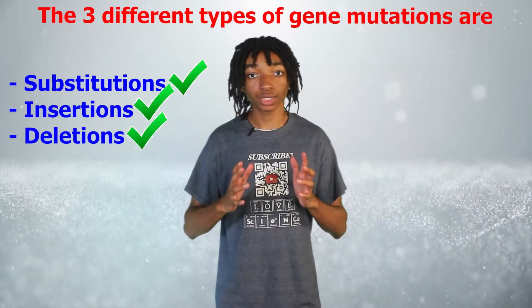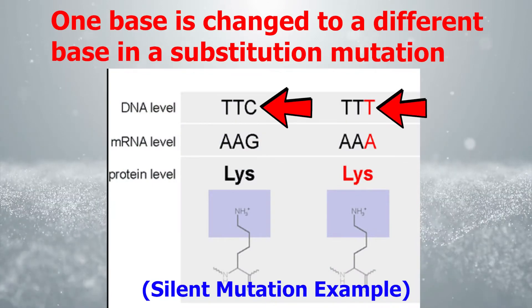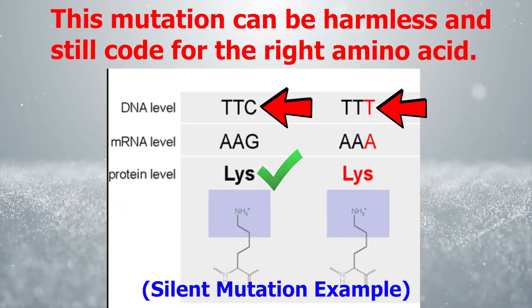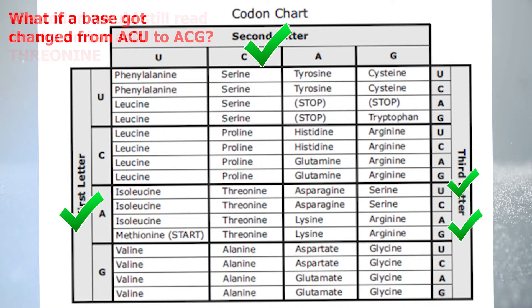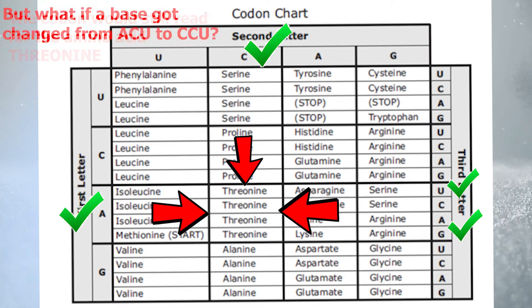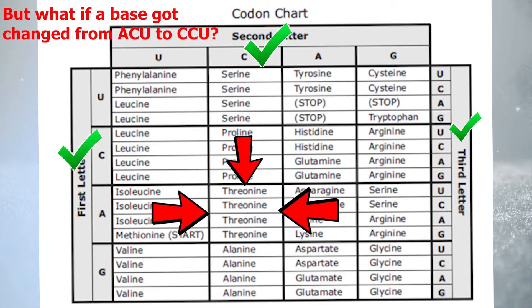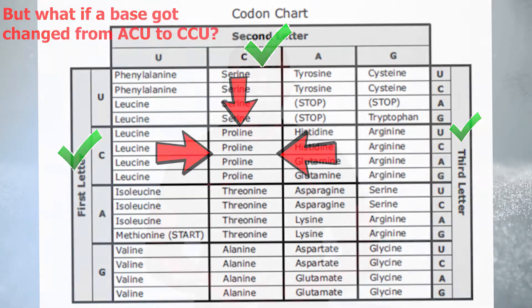These types of mutations usually occur during DNA replication. Now let's take a look at all three types, starting with substitution mutations. In a substitution mutation, one base is changed to a different base. This mutation can be harmless and still code for the right amino acid. For example, if a mutation changed one base of a codon from ACU to ACG, the codon would still read for the amino acid threonine. But a change in the first base of the codon from ACU to GCU changes the amino acid from threonine to proline, which could have a huge effect on the overall functioning of the protein.